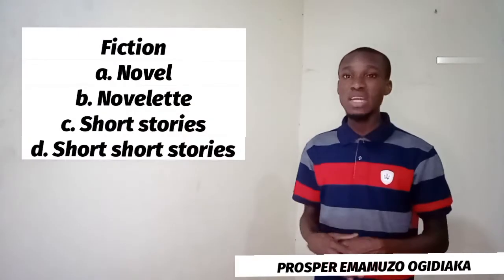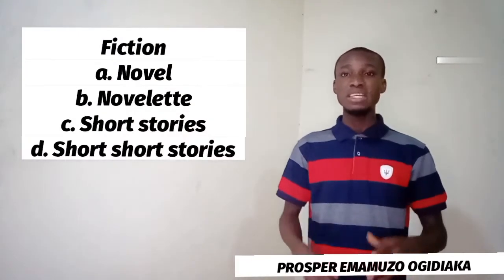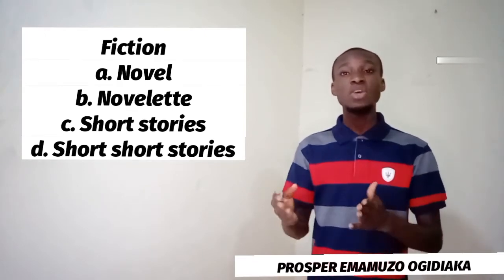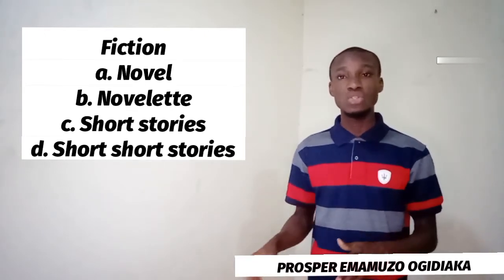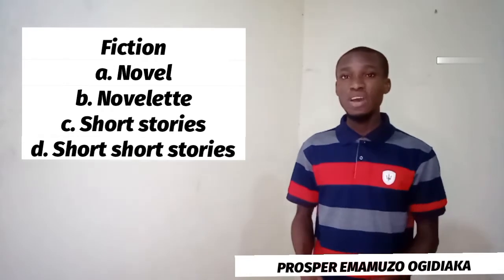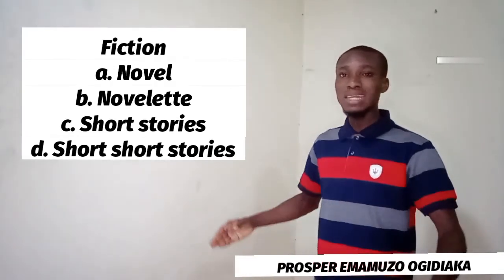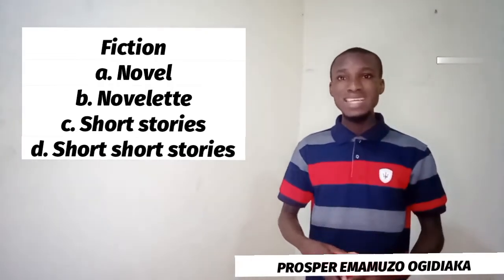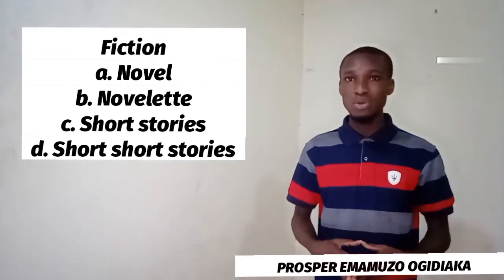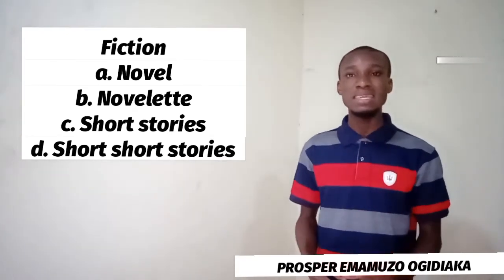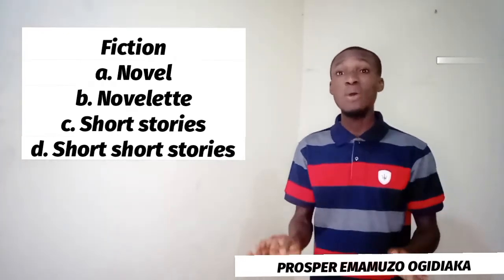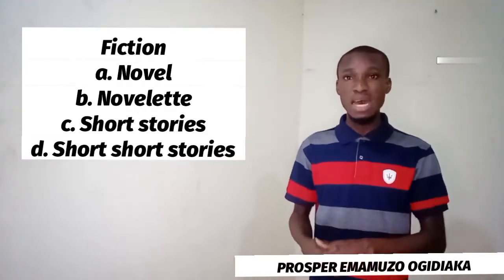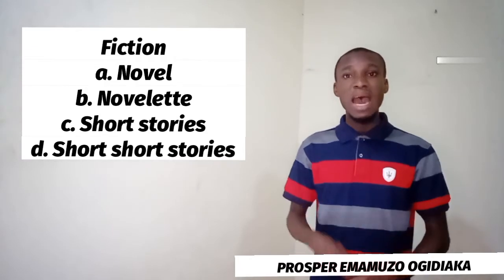For fictional prose, we have the novel, the novelette, the short story, and the short short story. A novel is that kind of long narrative that has at least fifty thousand words. It takes a long time to read — it can take you no less than twelve hours, even a whole day or several days to complete that particular work of art.